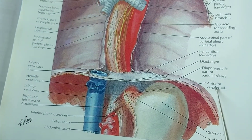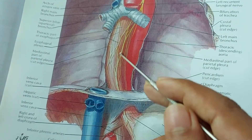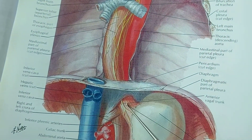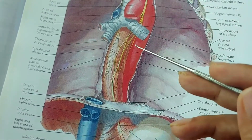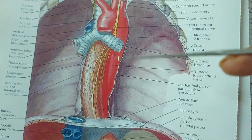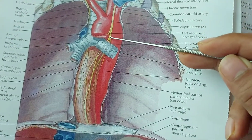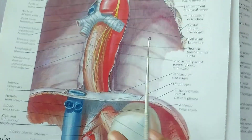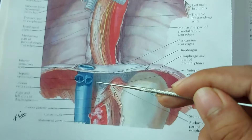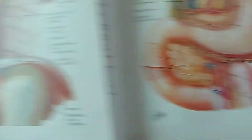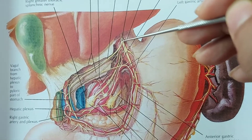The anterior vagal trunk passes from the thorax into the abdomen through the esophageal opening at the level of the 10th thoracic vertebra. It is important to remember that the left vagus nerve forms the anterior vagal trunk, and the right vagus nerve forms the posterior vagal trunk.